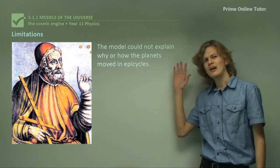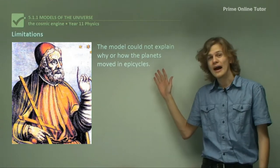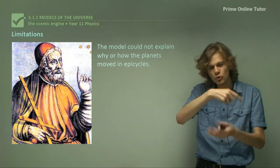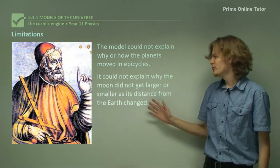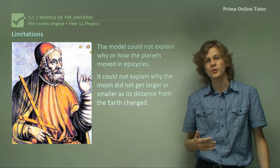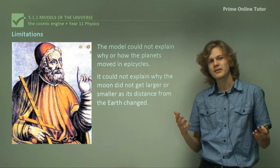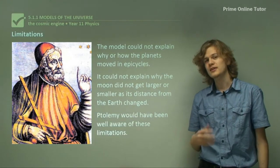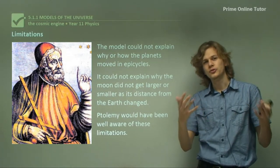So the model had some downfalls, some limitations. It couldn't explain why or how the planets moved. Perhaps there was some sort of god moving all the celestial bodies in circles or epicycles. And it couldn't explain why the moon didn't get larger or smaller as it moved back and forth during its epicycles. These are fairly obvious limitations. Ptolemy would have been well aware of the limitations of his model. However, it could still make good predictions, and so it was still put to good use.